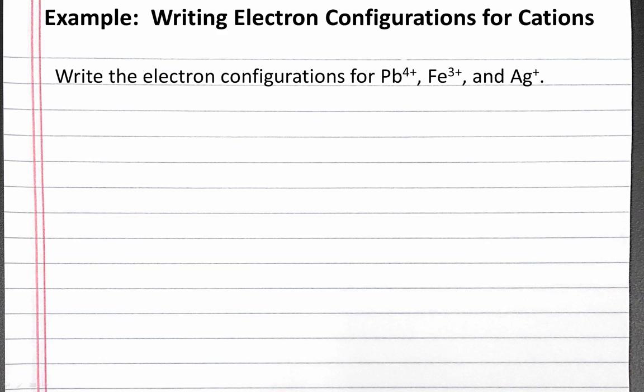In this example problem, we write electron configurations for three different cations. Our problem reads: write the electron configurations for Lead-4+, Iron-3+, and Silver-plus.